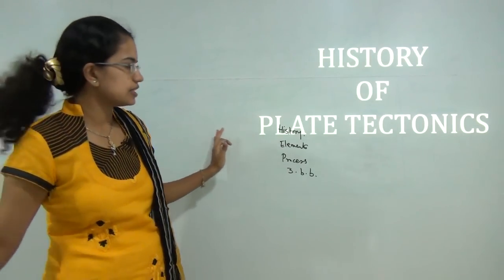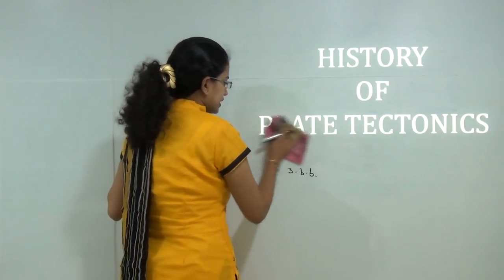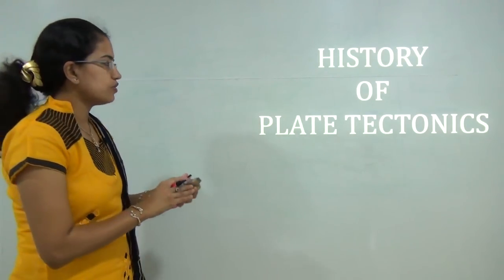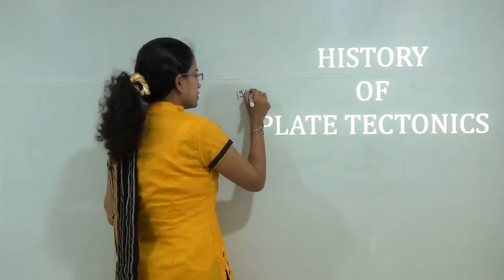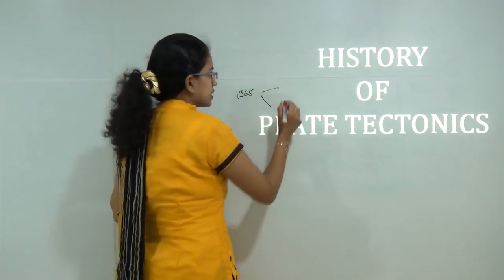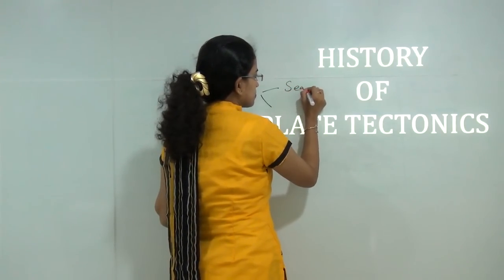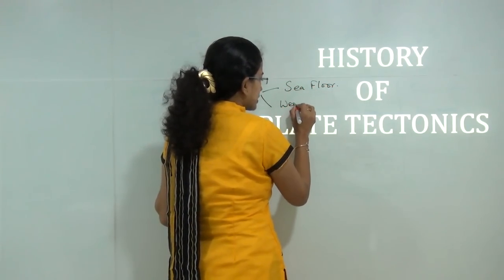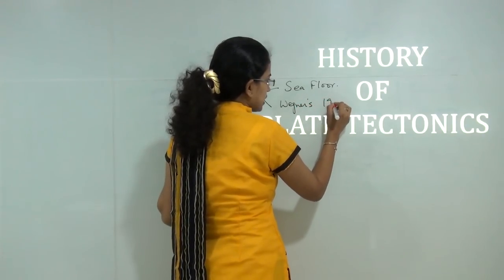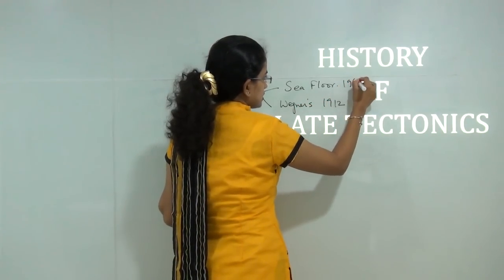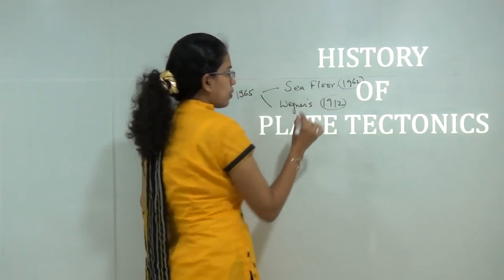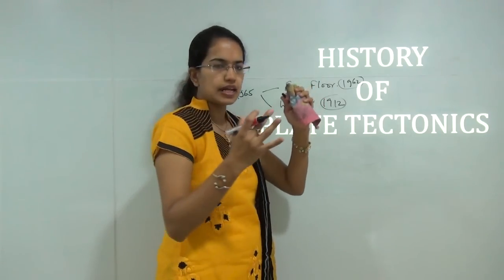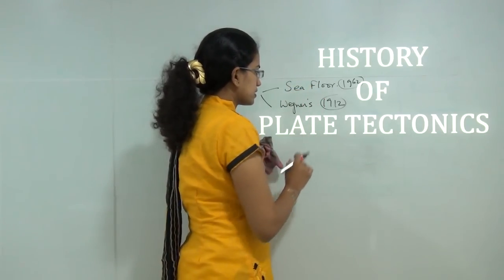Let's start with the history of plate tectonics. As I said, this concept was given by Tuzo Wilson. Tuzo Wilson in 1965 tried to incorporate two different concepts: one was the concept of seafloor spreading and another was the concept of Wegener's continental drift theory given in 1912 and around 1962. What he tried to do was incorporate these two concepts under a single ambit, and that was known as plate tectonics.